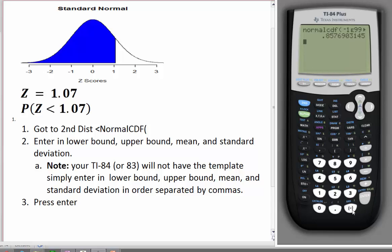So the proportion that falls below 1.07 is .85769 and so on.